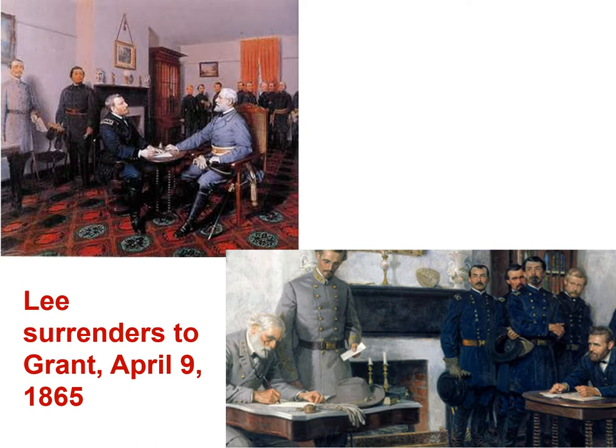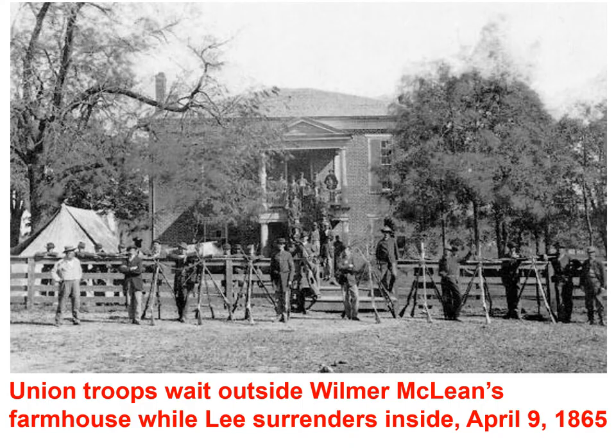Lee showed up first in his finest uniform. Grant arrived a bit later, somewhat in tatters and in a hurry. They exchanged pleasantries for a while, because they knew and respected each other, before Lee said they needed to get down to signing the agreement and discussing the terms they'd previously corresponded about. Grant was very generous in his terms — he allowed Lee's men to leave and did not put them in prisoner of war camps. He even allowed them to take their guns, since they'd need those to hunt, and if they had horses, they could take those too. All they really had to do was promise not to take up arms against the United States again.